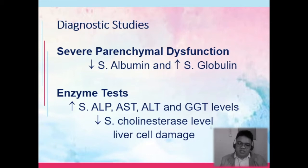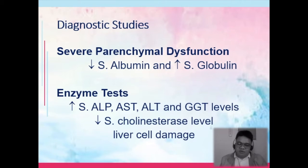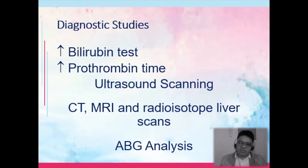GGT may also be increased in kidney or bone damage; however, if congruent with other laboratories, you would suspect liver damage. There will be a decrease of serum cholinesterase levels, indicating that the liver cells are already damaged. Bilirubin is expected to be increased. Prothrombin time is increased — in other words, prolonged — meaning there is increased risk for bleeding.